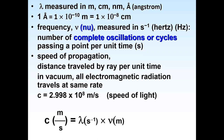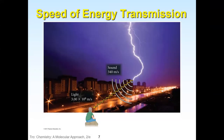This is the equation we're going to be using to calculate our wavelength and our frequency. The equation is C equals wavelength times frequency. C is going to be constant — that's our speed of light. The units are in meters per second. C equals wavelength times frequency, and we'll go over a couple of examples on how to do this.